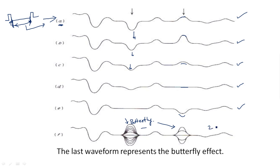In this observation, there are two moving targets identified by the butterfly effect. In this way, we can identify moving targets among stationary clutter using the butterfly effect in MTI and Pulse Doppler radar. Thank you.